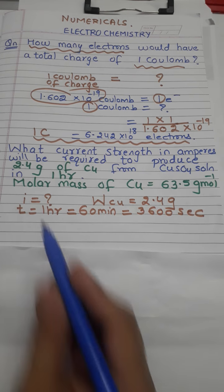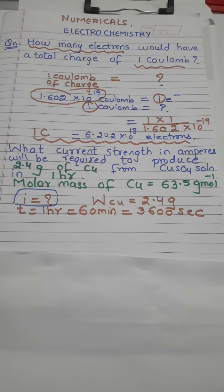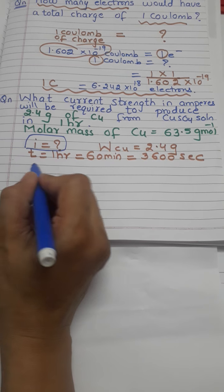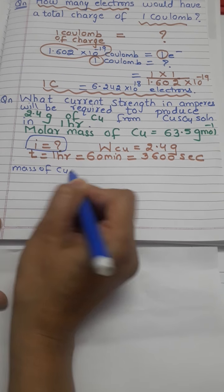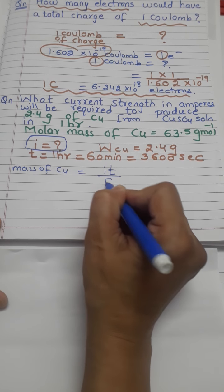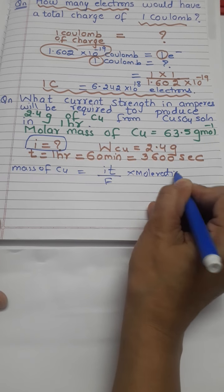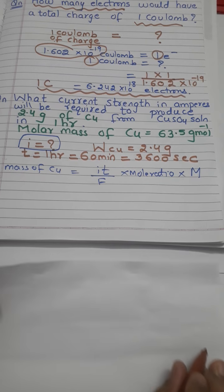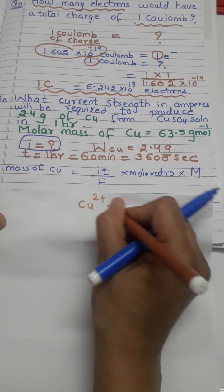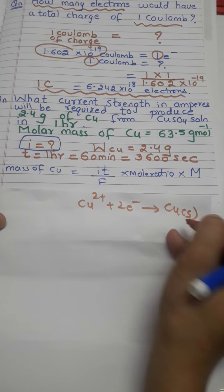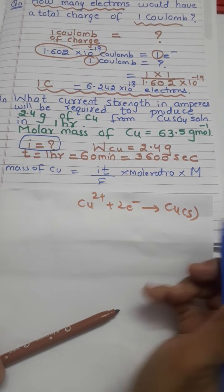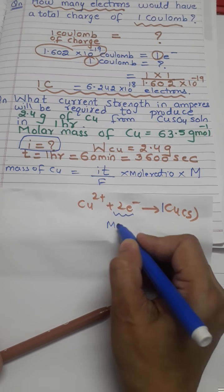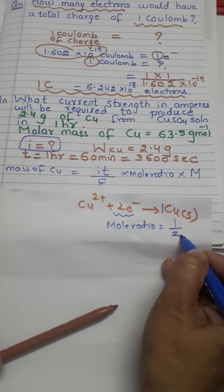The question is to find the current strength. We know the formula well — we have solved this during our theory sessions. Mass of copper = IT/F × mole ratio × molar mass. For the mole ratio, we need the half-cell reaction. Mole ratio is moles of product formed upon electrons required. In this example the mole ratio is 1/2.